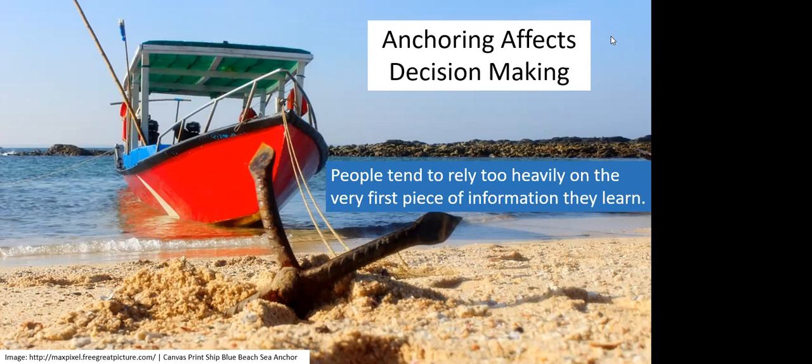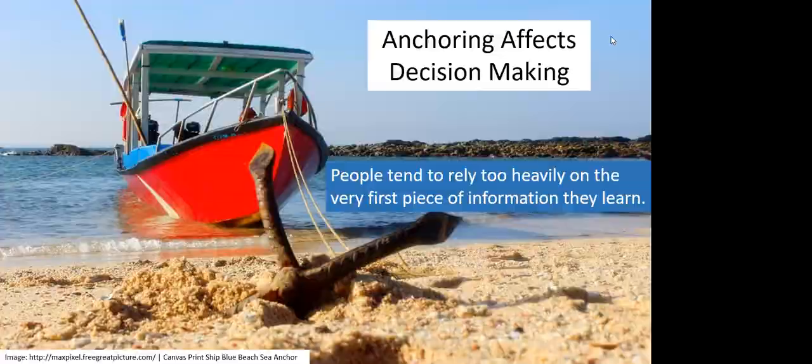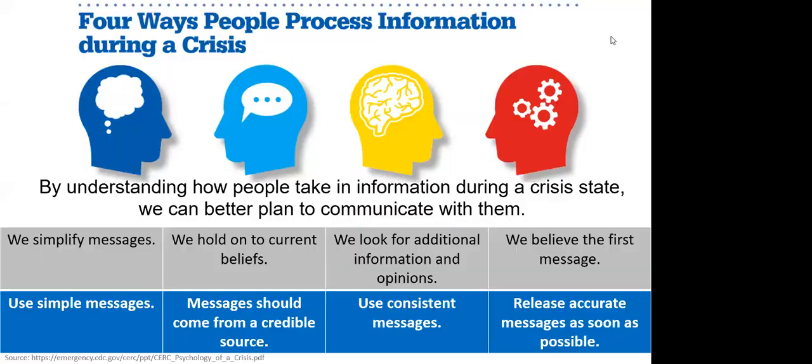One of the key things is when there's a pandemic, when there's a crisis, you have to be very clear at the beginning to say, this is going to be an evolving situation. There's going to be new information all the time. You may have to change what you're doing as we continue to find out new information. So that's a key part to the messaging. Now, when there's a crisis, there's four ways people process information. And so by understanding how people take in information during the crisis state, we can better plan to communicate with them. So we'll look at these four ways.